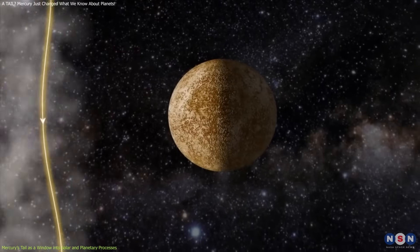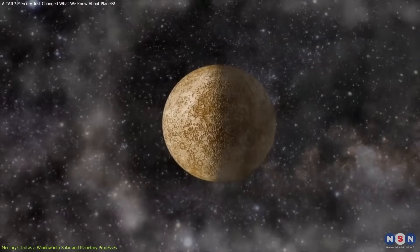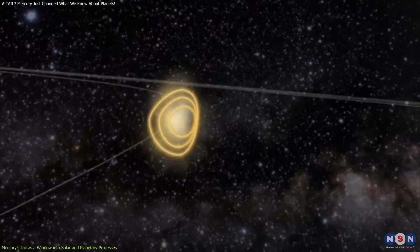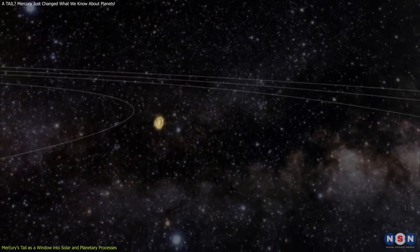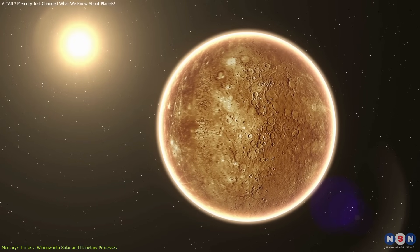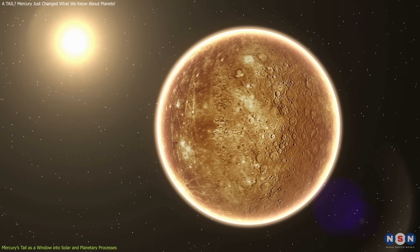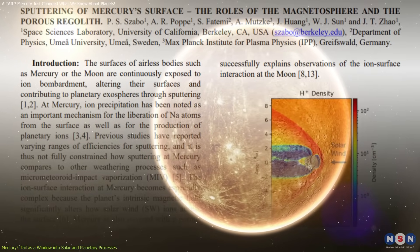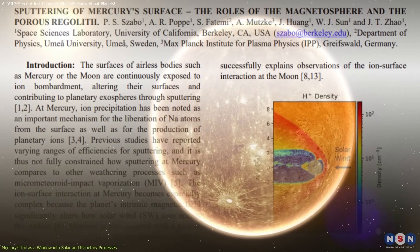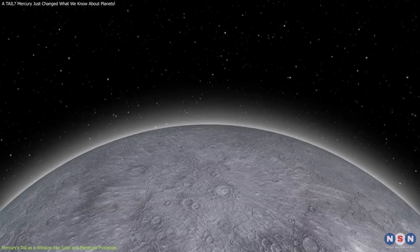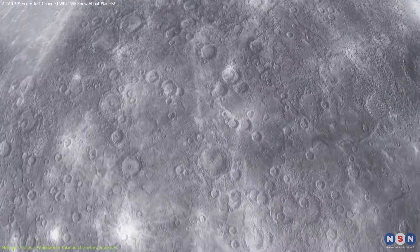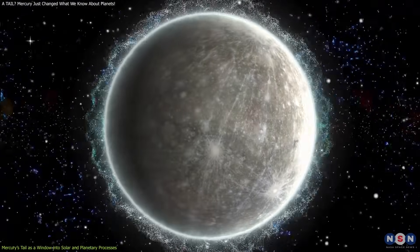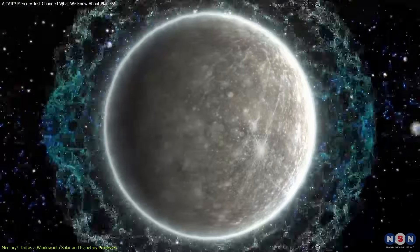When this plasma hits Mercury, it doesn't just bounce off. Mercury has a weak magnetic field, barely strong enough to deflect some of the incoming solar wind. Much of this energetic material reaches the surface, triggering a process called sputtering, where particles in the solar wind physically knock atoms off Mercury's surface. Sodium is particularly susceptible to this process. All this surface activity contributes to the constant replenishment of the exosphere, feeding it with fresh atoms.